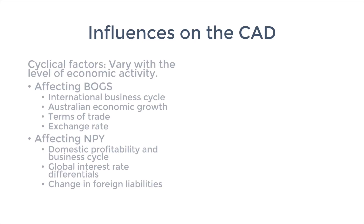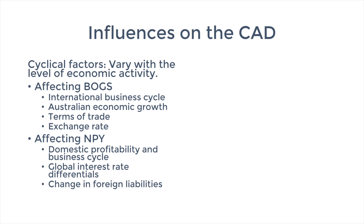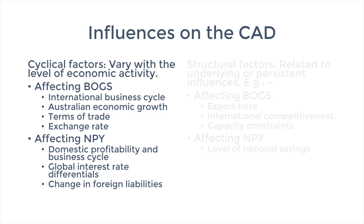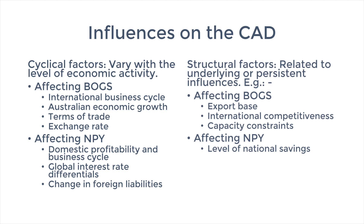Influences on the current account can be described as cyclical or structural. Cyclical influences are the ones that are more short-term in nature and tend to be influenced by changes in the business cycle. Structural influences are the more ongoing underlying factors. Today I'll be explaining the influences on BOGS, and the first cyclical influence I'll go through is also the most obvious, or at least the most observable.